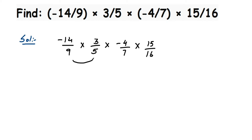Instead, we're going to use a cancellation method — cancel the numbers before multiplying. When canceling, you cancel a number in the numerator with a number in the denominator. Any numerator can cancel with any denominator. You cannot cancel numerator with numerator — for example, you cannot cancel 3 and 15 if they're both numerators. Cancellation means dividing across numerator and denominator.